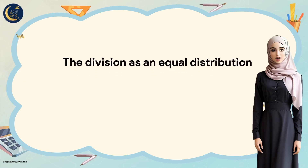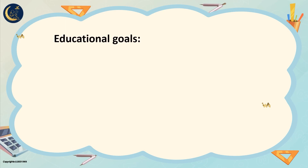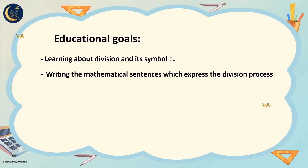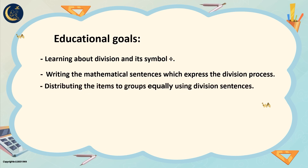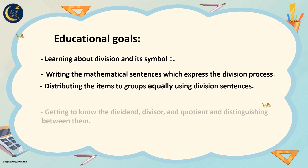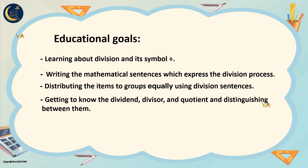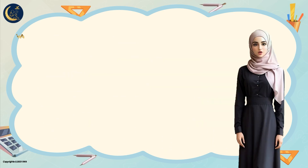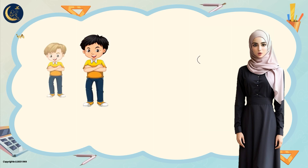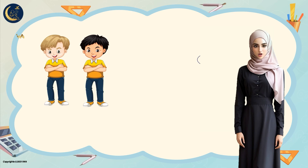The division is an equal distribution. The mother brought a box of chocolates with four pieces and she wants to divide it equally between Sami and Rummy. How much will she give each of them? That means she wants to give Rummy the same number that she wants to give Sami.